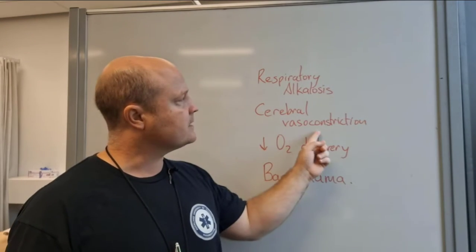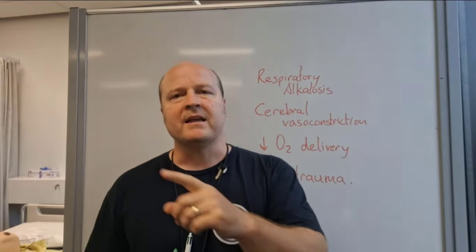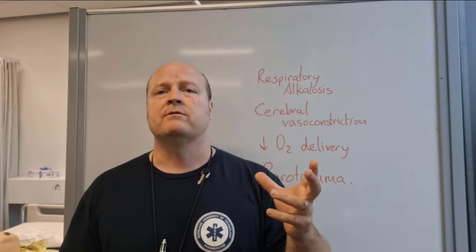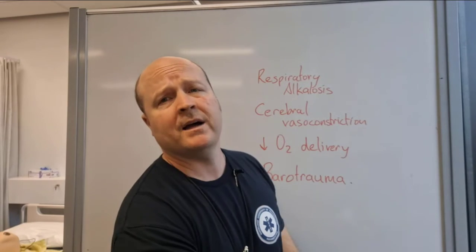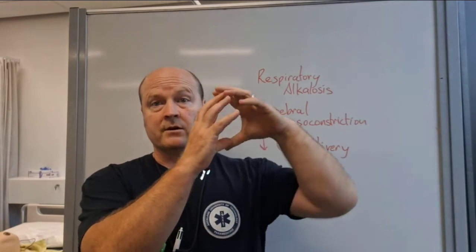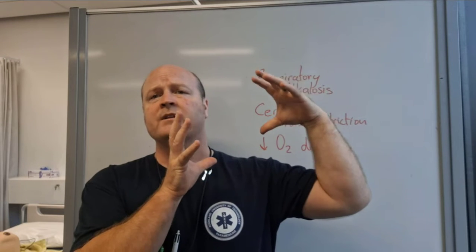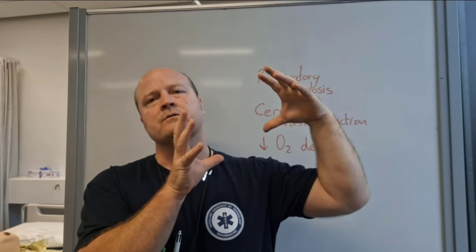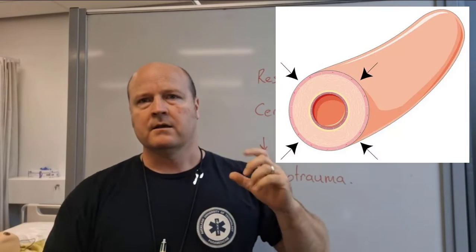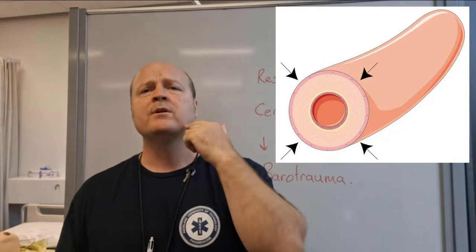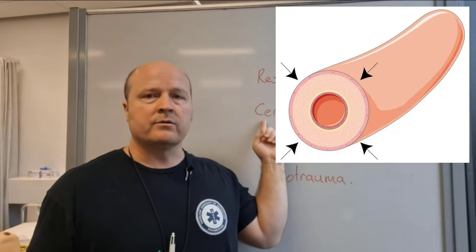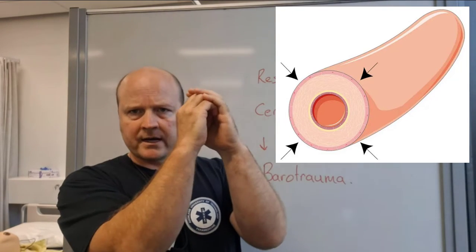Next up: cerebral vasoconstriction. To maintain good blood flow, your body responds to levels of carbon dioxide. If we have too much, we want more blood flow so our blood vessels will vasodilate. If we don't have enough, our blood vessels will vasoconstrict. So if we blow off all our carbon dioxide because we're over ventilating, the blood vessels going into our brain will shrink and get smaller.